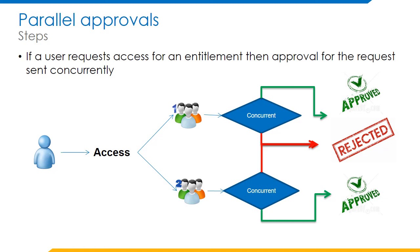As discussed earlier, Parallel Approval is a type of approval provided by IdentityIQ as an out-of-the-box feature. Approvals are processed concurrently and there must be consensus — we wait for all approvers to approve and then provision. If the first approver rejects, the entire approval process is terminated. In this example, a user has requested access for an entitlement, and the approval is sent to two workgroups. Both approvals are sent concurrently to the two workgroups, and if anyone rejects, the provisioning will be terminated.